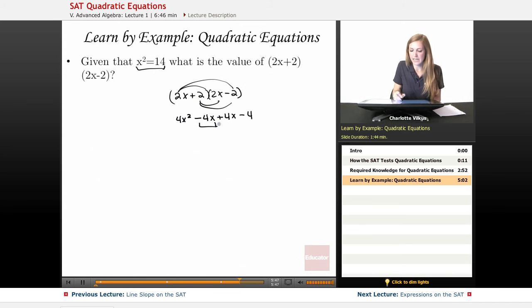These two are going to cancel out when I combine like terms because I have a positive 4x and a negative 4x, so what I'm going to get here is 4x² - 4, and I already know what x² equals.